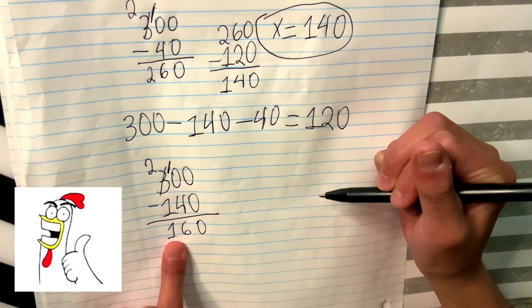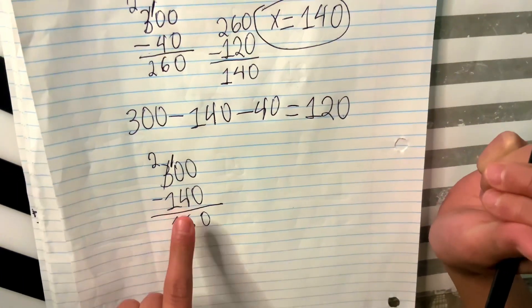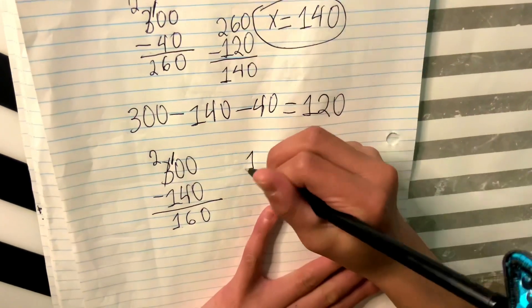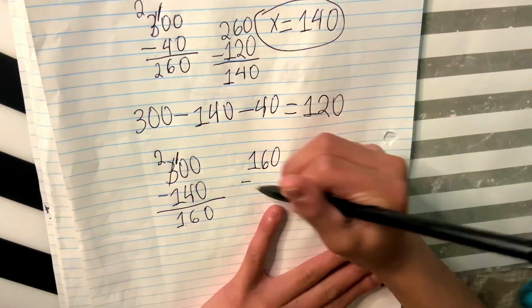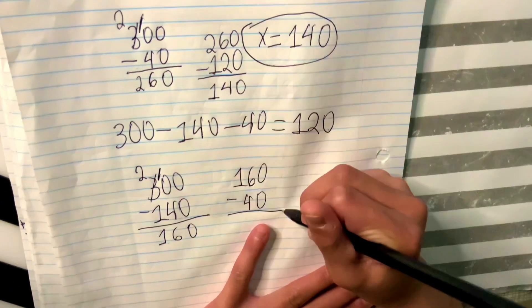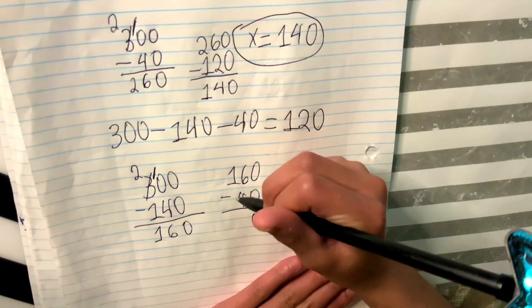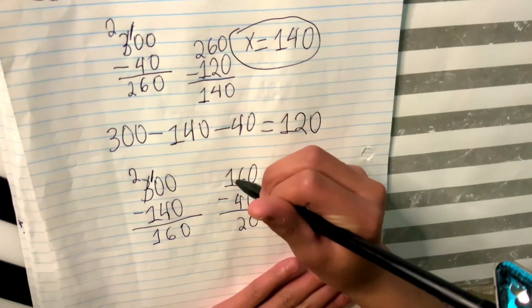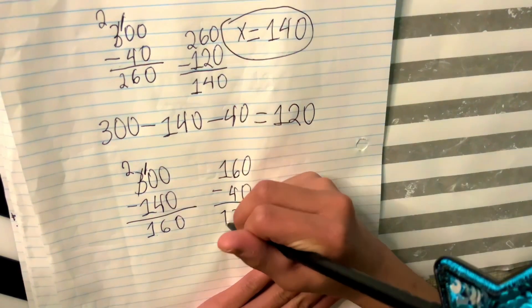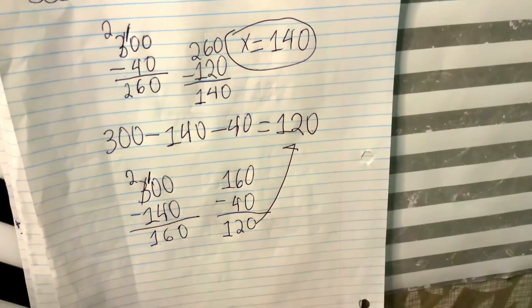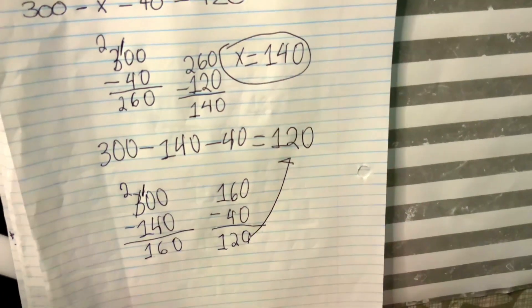So you're not over yet since we're going to still see if it's equal to the other side. So we're going to do 160 minus 40. 0 minus 0 is 0. 6 minus 4 is 2. And 1 by itself is basically just 1. And our answer is correct. Yay! It's all correct, guys. And balanced.